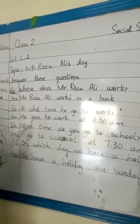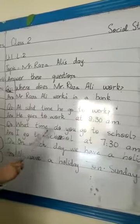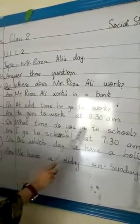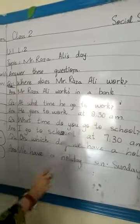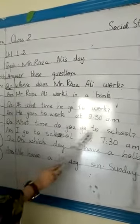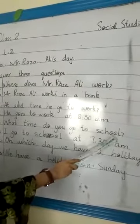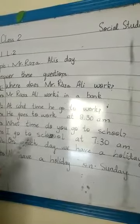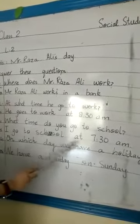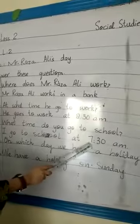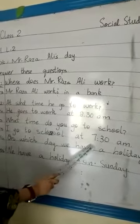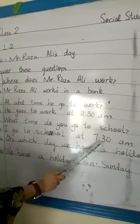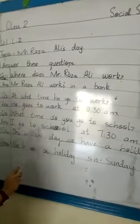Question number 3: what time do you go to school? Aap kis time school jate hain? Answer: I go to school at 7:30 a.m. Mein subha 7:30 yaani saadhe saat baje school jata hoon.